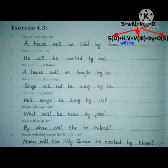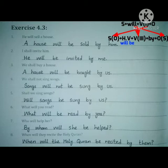Sentence number 1: He will sell a house. 'A house' will come to the beginning because it is the object of the active voice. After 'a house' we put the helping verb 'will be'. Then the third form of the verb — verb here is 'sell', and the third form of 'sell' is 'sold'. After 'sold' we put 'by' and 'he' converts to 'him'. Answer: A house will be sold by him.